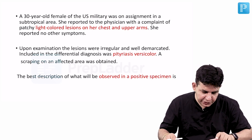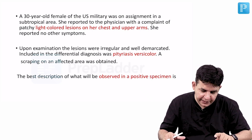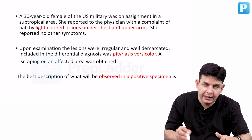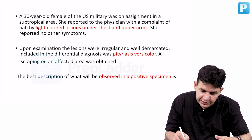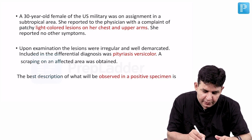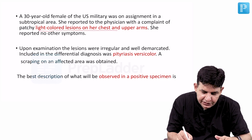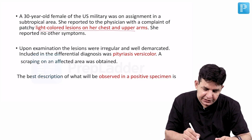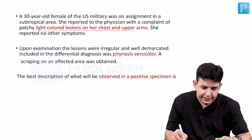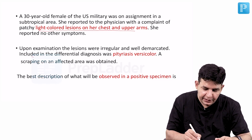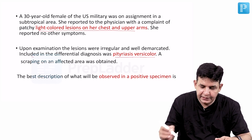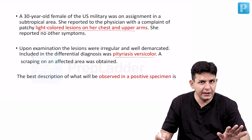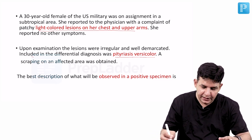A 30-year-old female of the US military was on assignment in a subtropical area. She reported to the physician with a complaint of patchy light-colored lesions on her chest and upper arm. Upon examination, the lesions are irregular and well demarcated. Included in the differential diagnosis was Pityriasis versicolor — the question itself is giving up the diagnosis: Pityriasis versicolor.